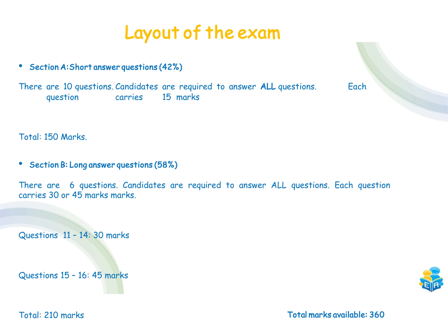We have two sections. We have Section A, which is our short answer questions, and Section B, which is our long answer questions. Within the short answer questions, we have 10 questions, and they're worth a total of 42% of the entire paper. You are required to answer all questions — there is no choice in the Junior Cycle paper. Each question carries 15 marks, giving us a grand total for Section A of 150 marks.